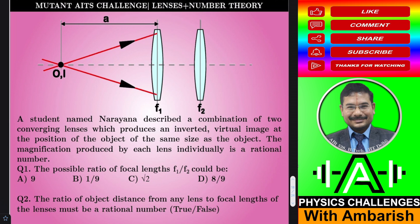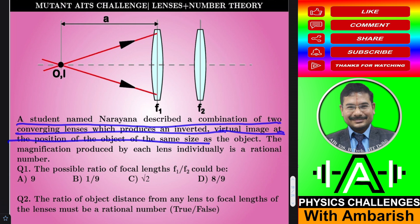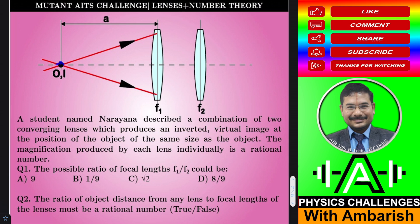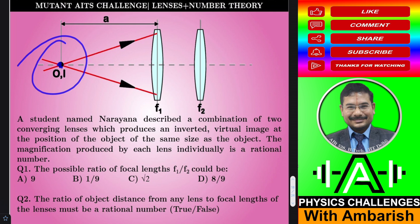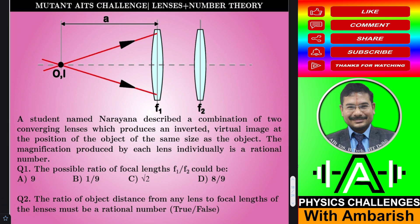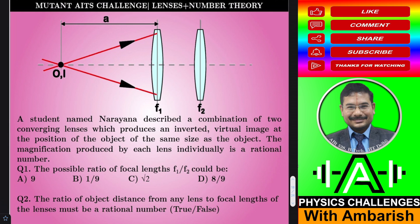So here is the question. A student named Narayana described a combination of two converging lenses which produces an inverted virtual image at the position of the object, of the same size as the object. So here is an object, and after processing through both the lenses, the final image is formed at the same position. If the object is erect, the final image is inverted and virtual. The magnification produced by each lens individually is a rational number — it cannot be just any arbitrary number, it has to be in P/Q form.